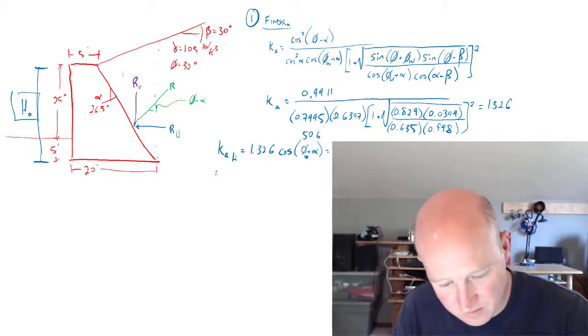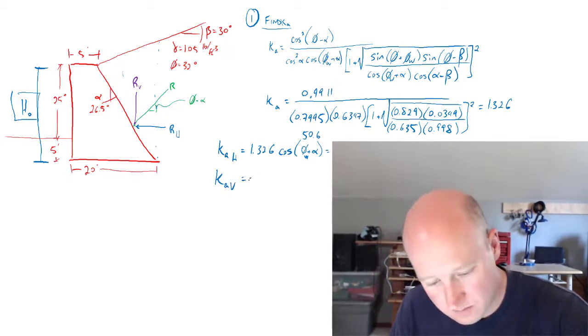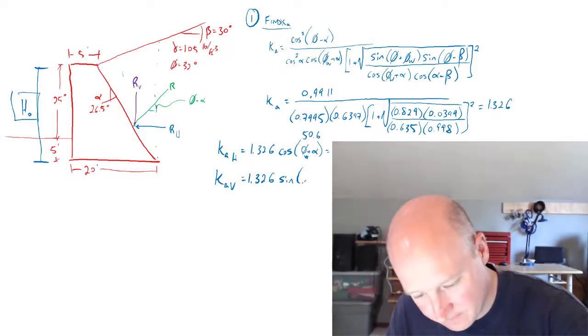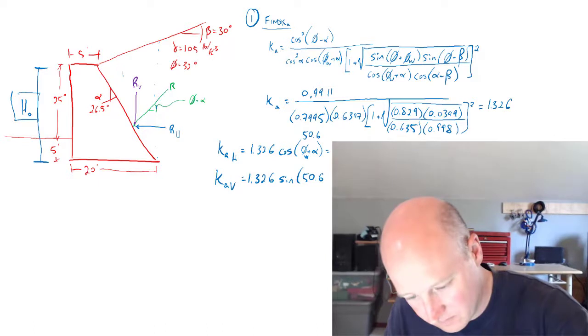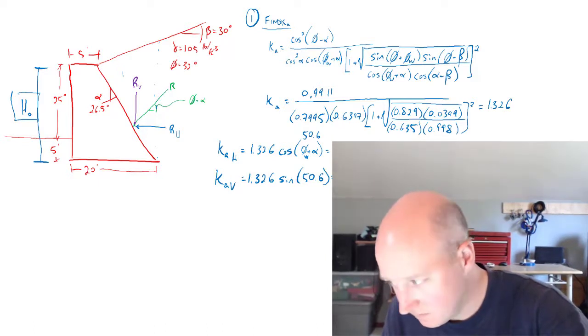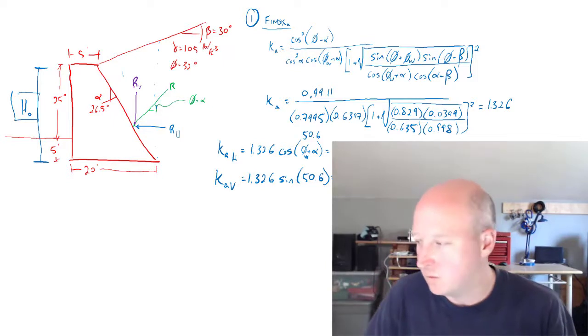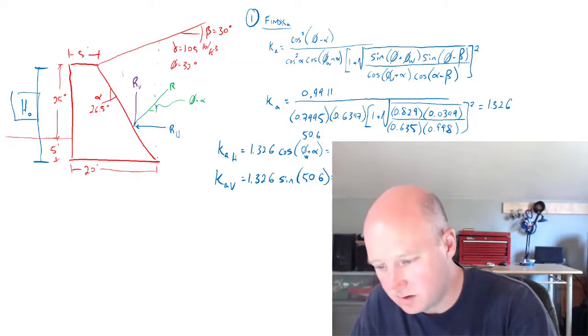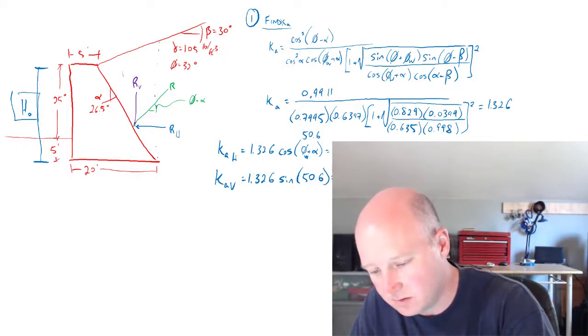So that's just going to be the cosine of phi plus alpha phi wall. And that is 50.6. And then the vertical k.